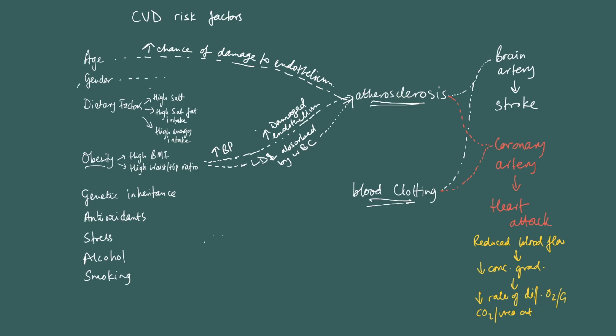Gender is linked to energy metabolism — not that males or females are more likely to be obese, but it's to do with how fat is stored in males versus females. I would link this to waist-hip ratio. Women and men tend to store fat in slightly different places in their body, and where men tend to store fat more than women is around the abdomen, which is associated with an increased chance of cardiovascular disease.